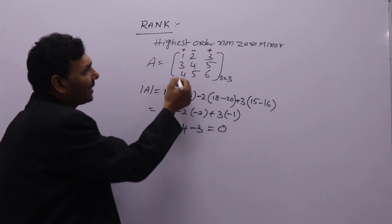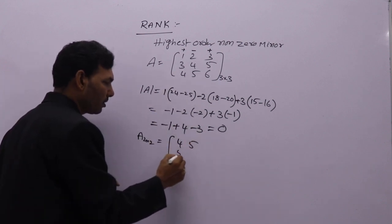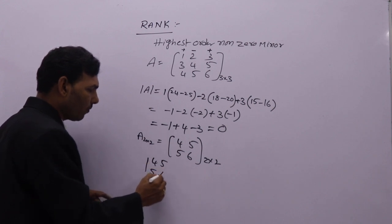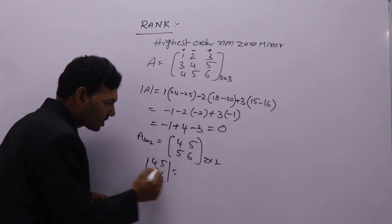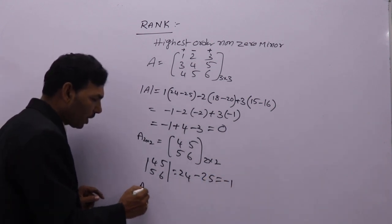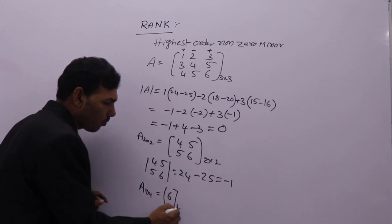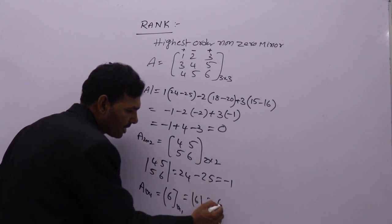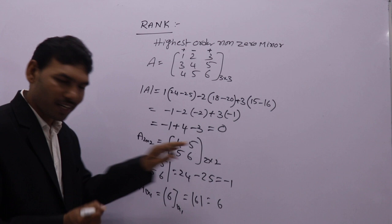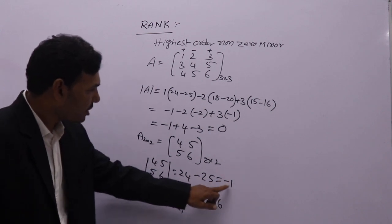Now I am finding sub-matrices by deleting one row and one column. A 2 by 2 sub-matrix: 4, 5, 5, 6. Finding its determinant: AD minus BC = 4×6 − 5×5 = 24 − 25 = minus 1. Also a 1 by 1 sub-matrix by deleting rows and columns: the element 6. Its order is 1 by 1, so determinant of 6 is 6. So: 0 is a minor of order 3, minus 1 is a minor of order 2, and 6 is a minor of order 1.